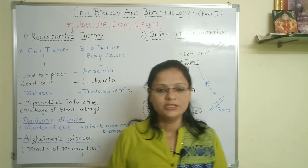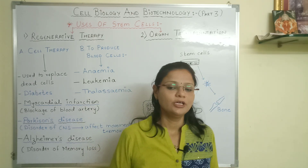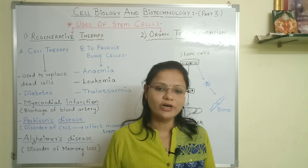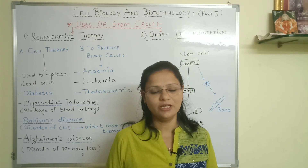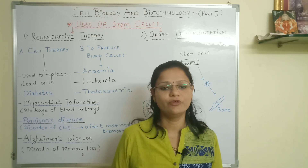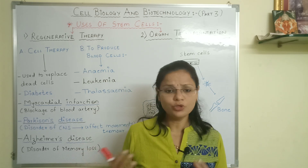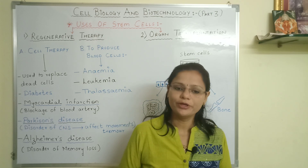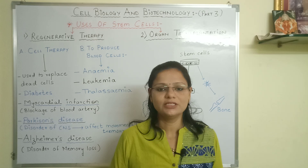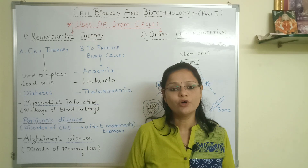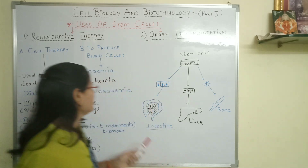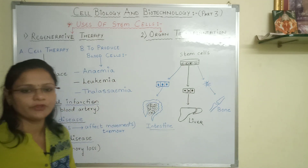Next is to produce blood cells. Our body has blood cells which carry out the whole body's functions — like a postman — carrying oxygen and nutrients throughout the body. So blood cells are very important. There are conditions, diseases, and disorders where blood cells are reduced or abnormal.